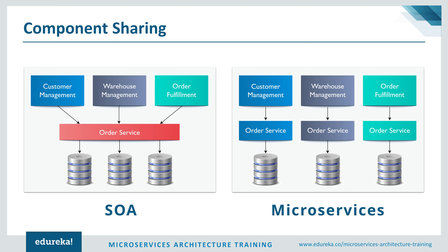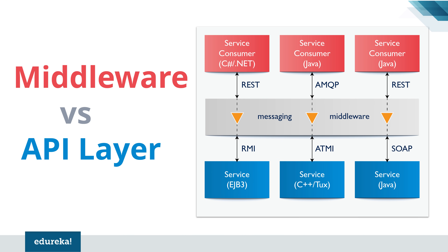The next difference is with respect to component sharing. In SOA, the same order service interacts with different smaller applications — for customer management, warehouse management, and order fulfillment — and the data is stored in different databases. But in microservices architecture, for each and every application there is a separate order service accessing its own database. So for customer management, warehouse management, and order fulfillment, each has its own order service and its own database. SOA uses middleware for communication, whereas microservices uses an API layer for communication.